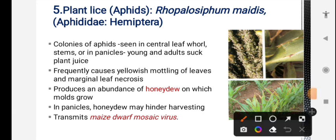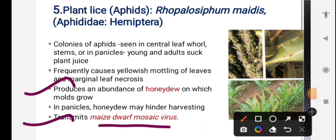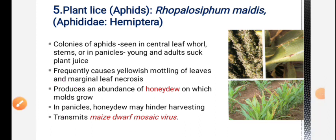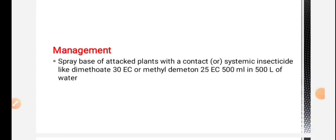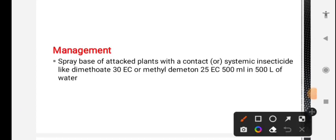Maize aphids produce an abundance of honeydew on which sooty mold grows. The most important point for aphids in maize is that it acts as a vector for Maize Dwarf Mosaic Virus. For management of aphids, systemic insecticides like dimethoate are used.